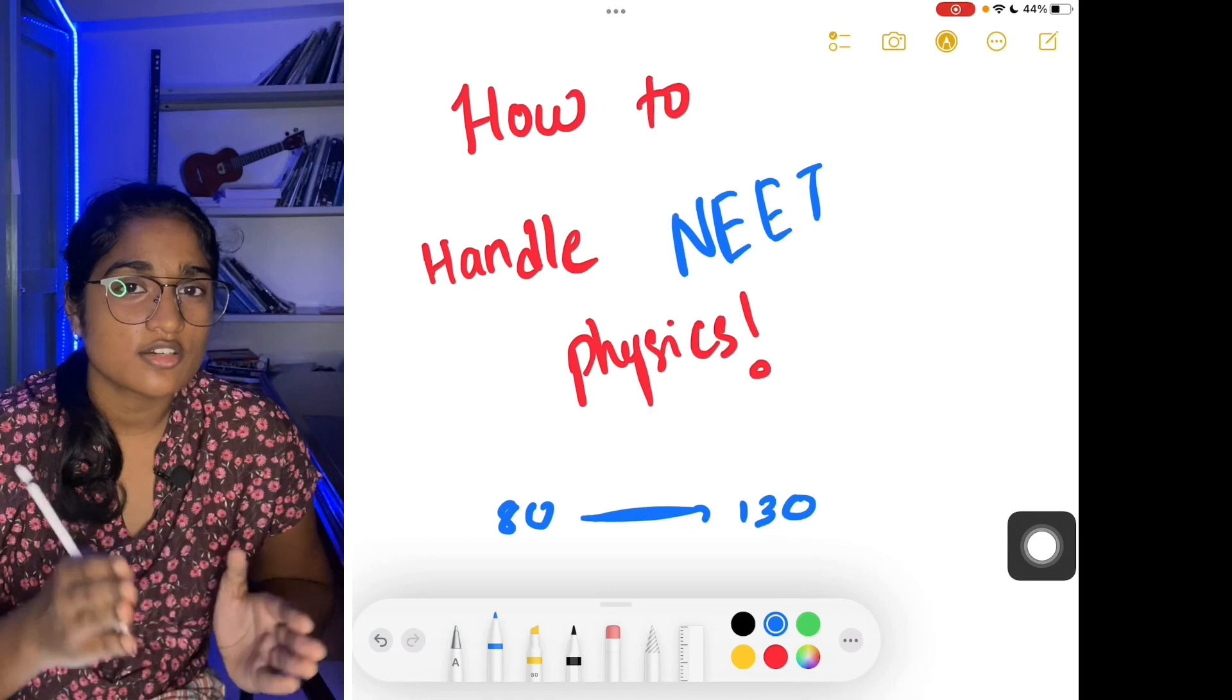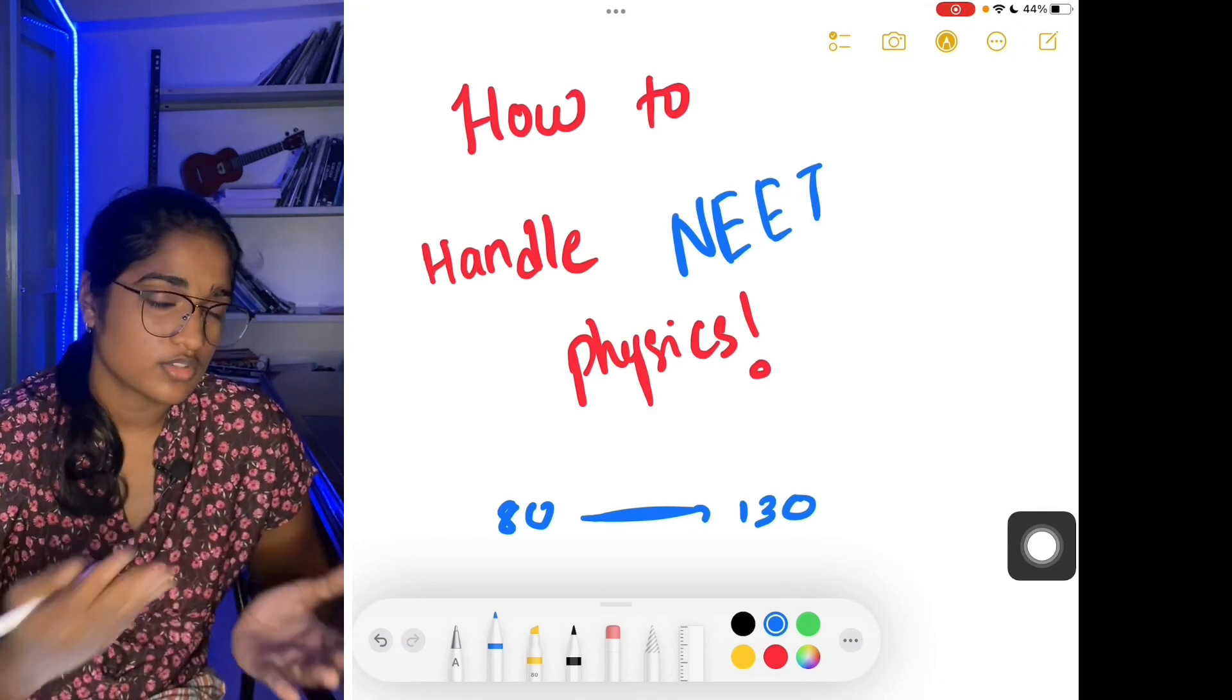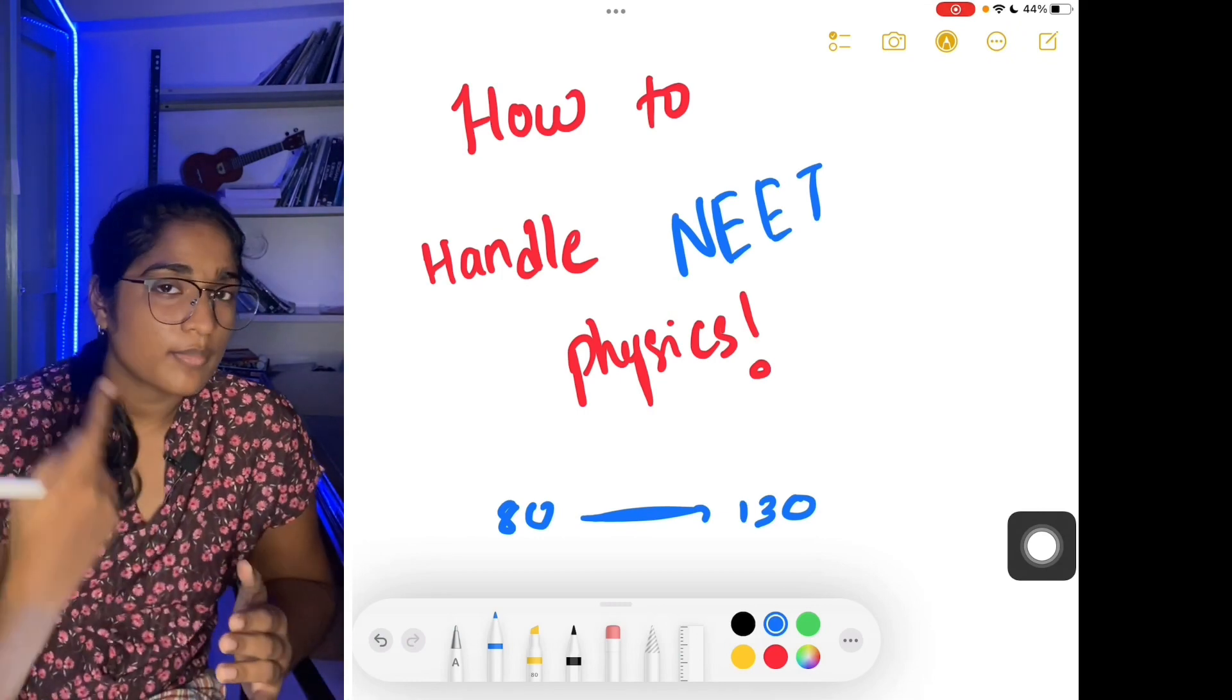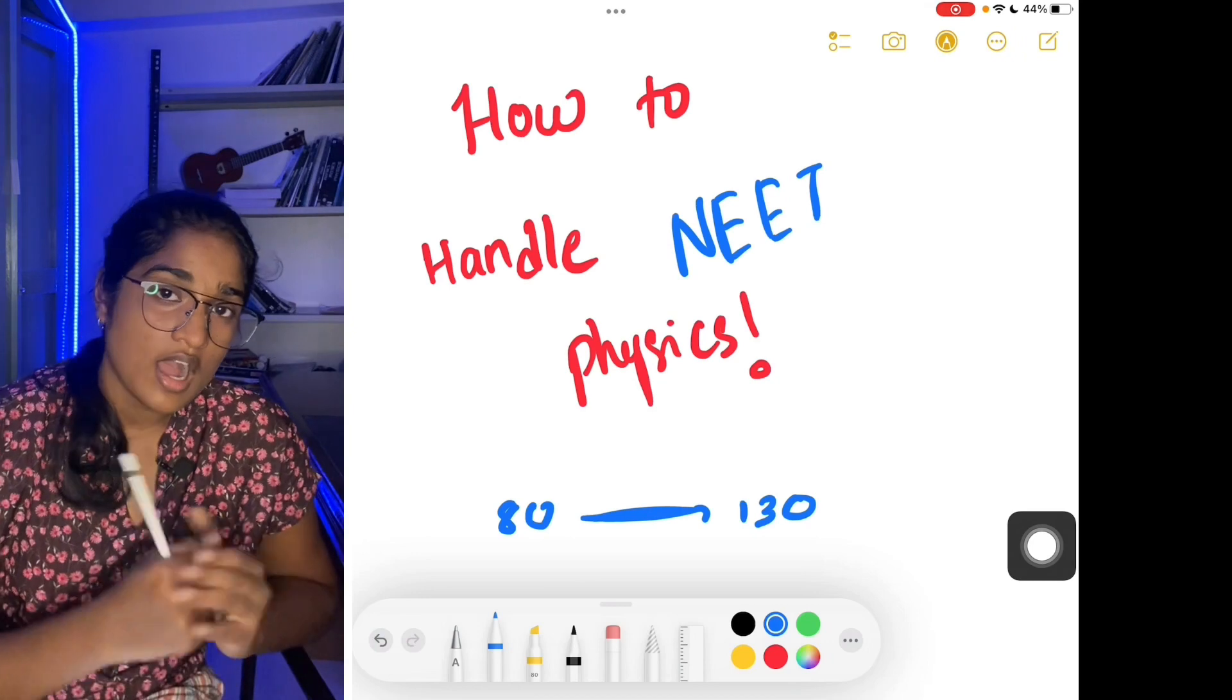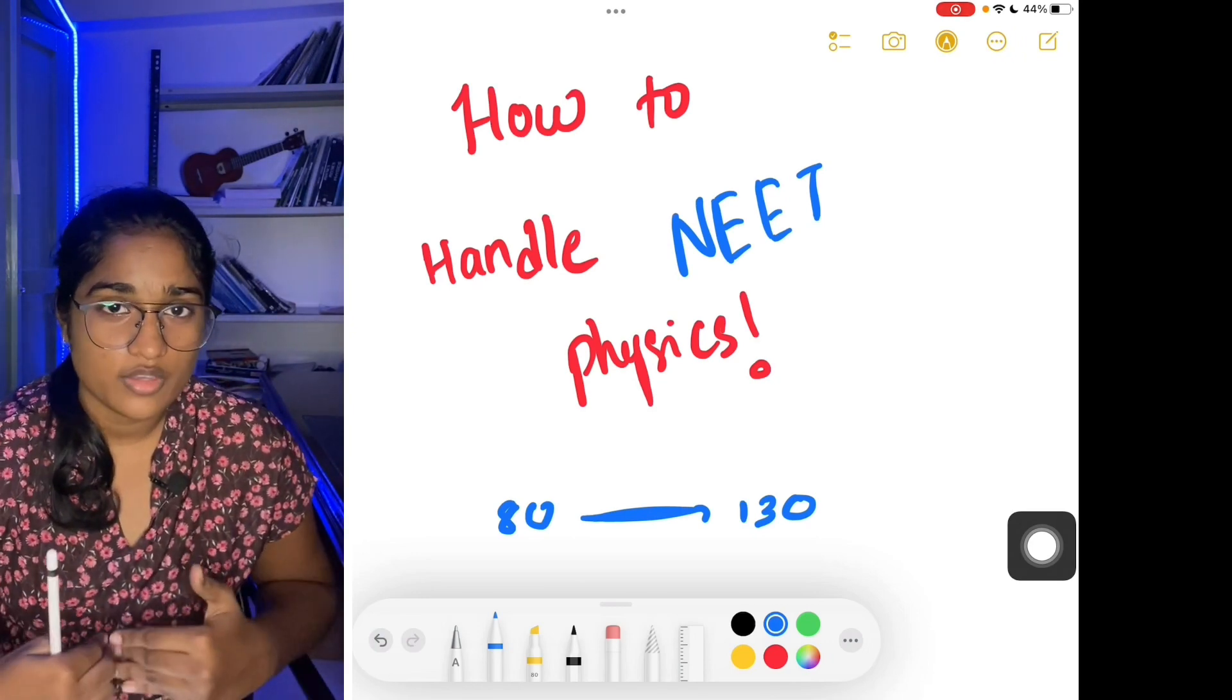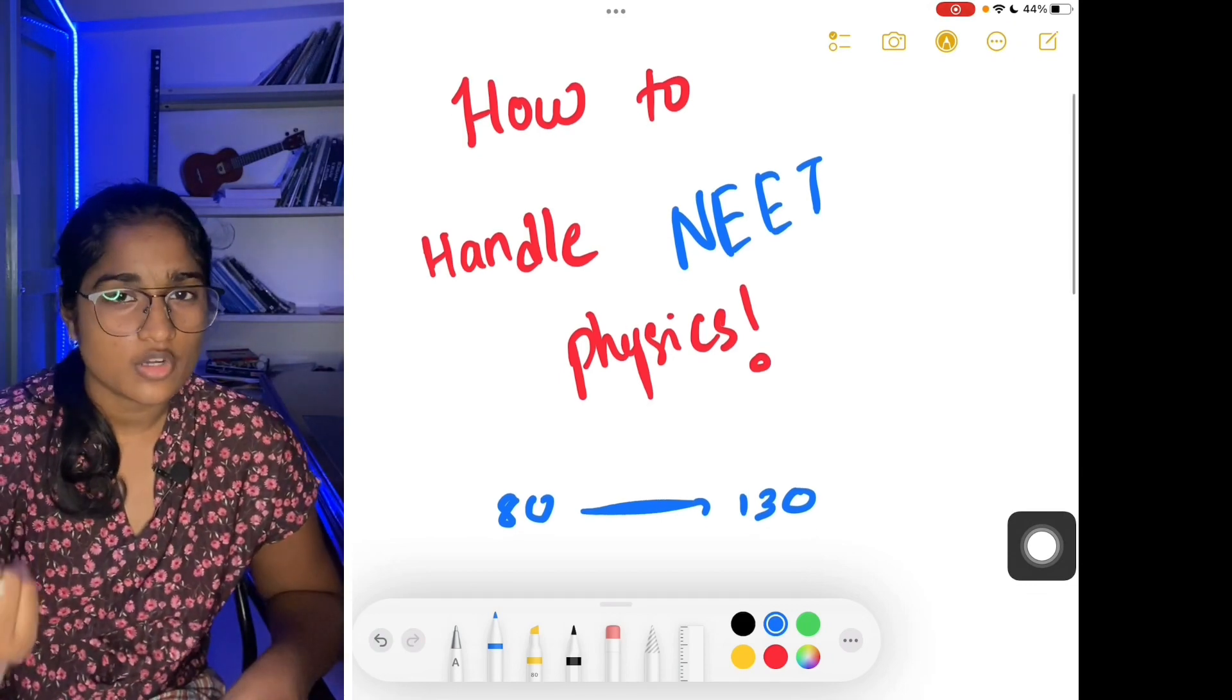The first tip is to create a formulae book. When you open a lesson, you will come across new formulae. In your short notes, include only important formulae. How do you identify these important formulae?